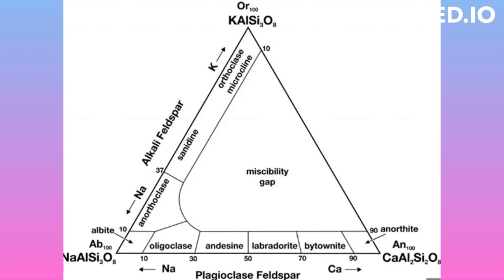If specimens of the high-temperature varieties are rapidly cooled, the random distribution is preserved. If the feldspar is allowed to cool very slowly, then exsolution will occur, and the solid solution will separate into a sodium-rich phase and a potassium-rich phase. Thus, one expects to find sanidine in rocks that were cooled very rapidly from high temperature, that is, volcanic rocks.